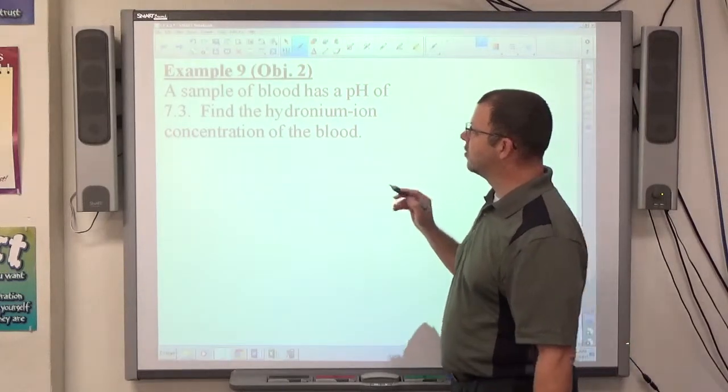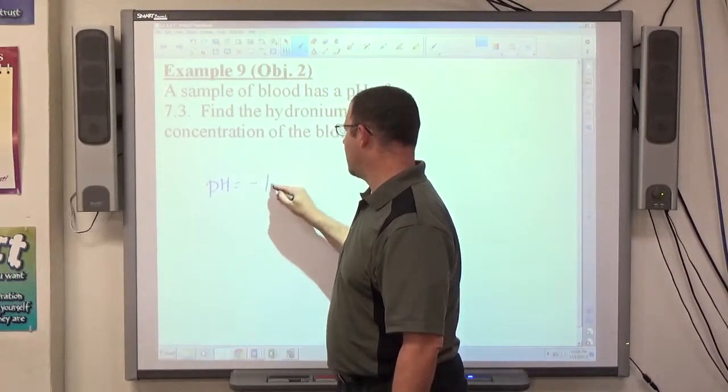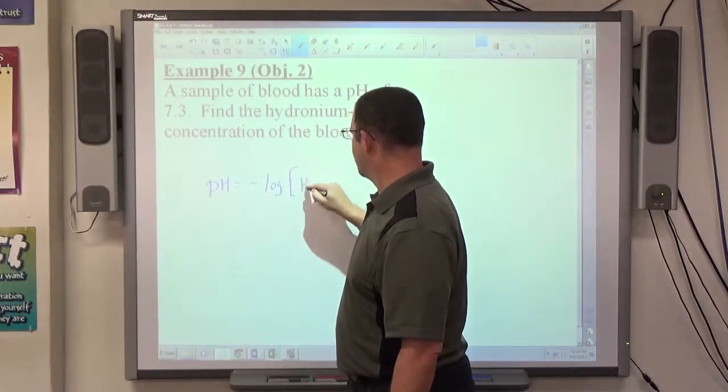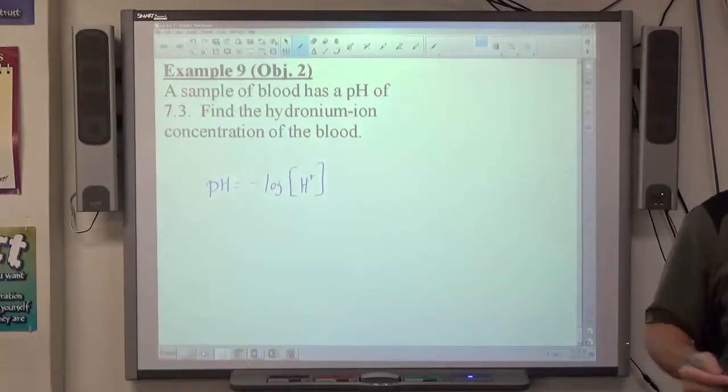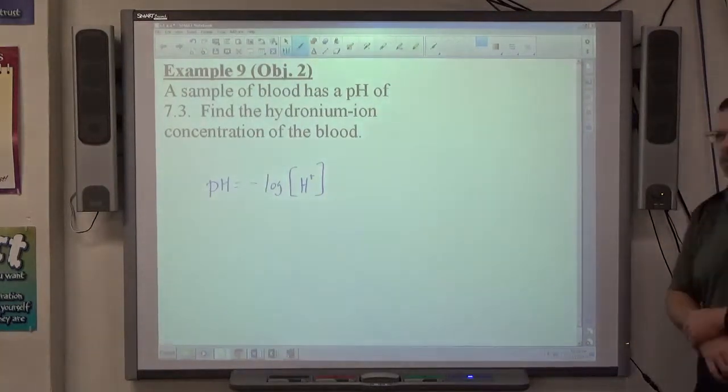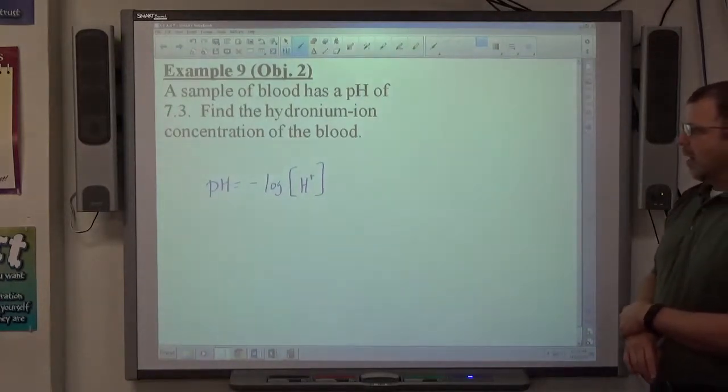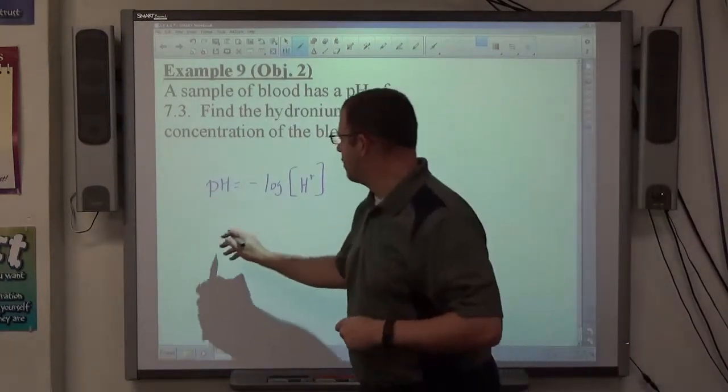A sample of blood has a pH of 7.3. Again, my formula says pH is equal to negative log of H+. That's the formula. That's what it always is. Again, formulas are not required to be memorized in this section. Any formulas you need will be supplied to you on quizzes and tests. So they gave me pH, they're asking for H+. So pH is 7.3.